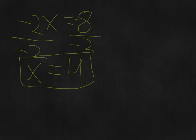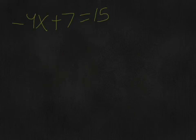That was fairly straightforward. Let's try a harder one. This question involves -4x + 7 = 15.